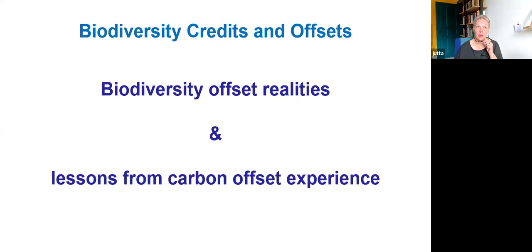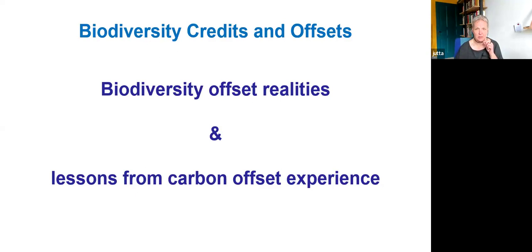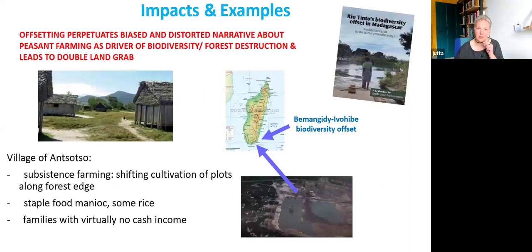I will first take you to three places where biodiversity offset initiatives are already being implemented. And then in the second part of my input, look at some lessons from the carbon offset experience that confirm what we're already starting to see with biodiversity offsets. The first place is the southeast of Madagascar, where the mining company Rio Tinto, one of the largest mining companies in the world, is extracting ilmenite or titanium dioxide — a mineral found in white industrial paint and plastics.